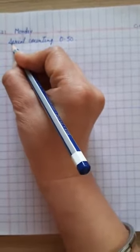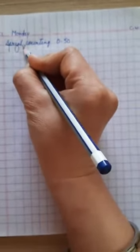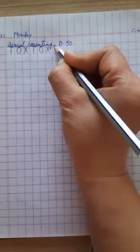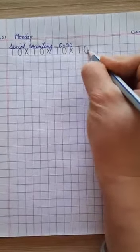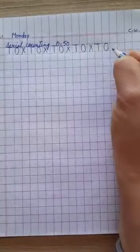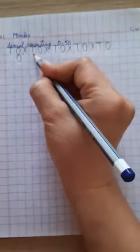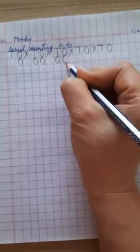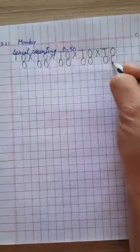First of all, write down the place values like this: tens, ones. Skip one line. Then again tens, ones. Once again tens, ones. Skip one line. Tens, ones. Tens, ones. Now we will write 0 here: 0, 0. Like this. Now start the counting.